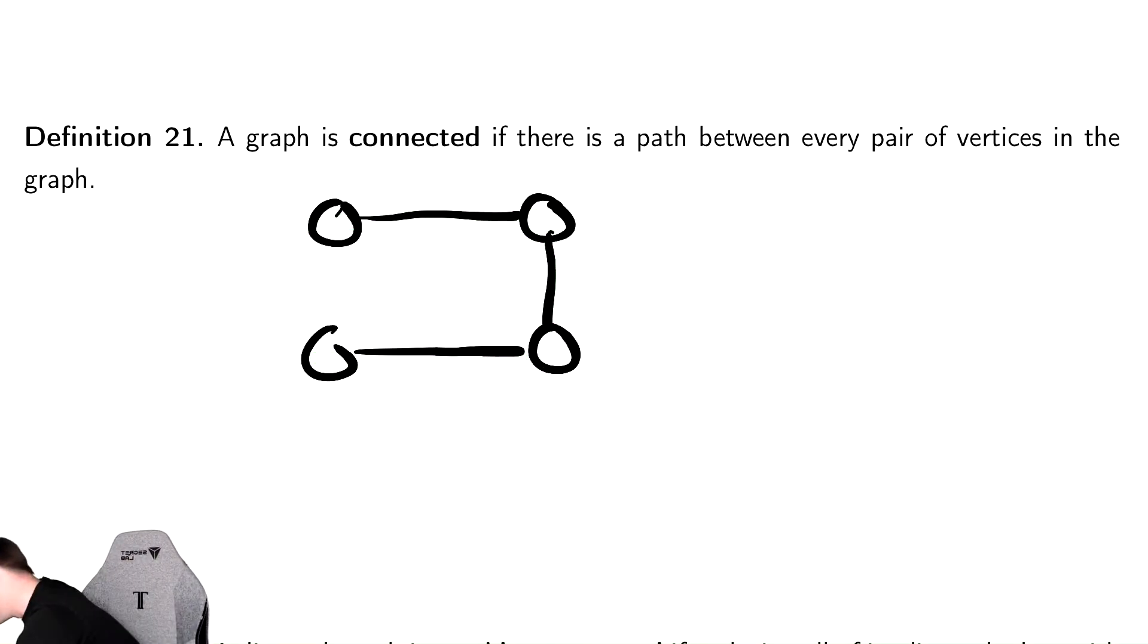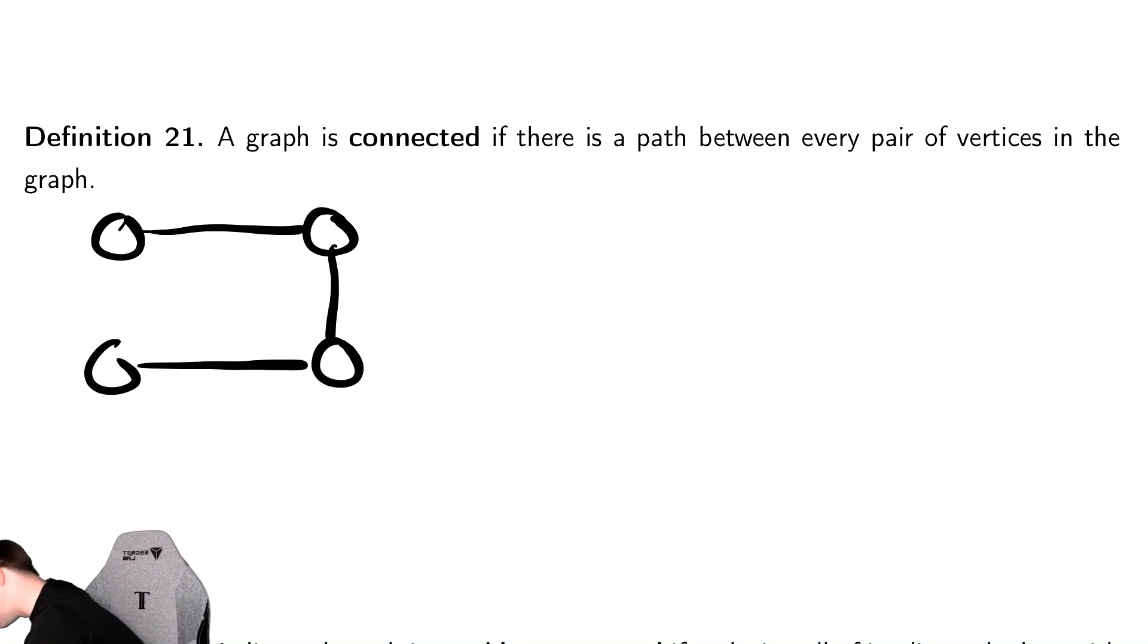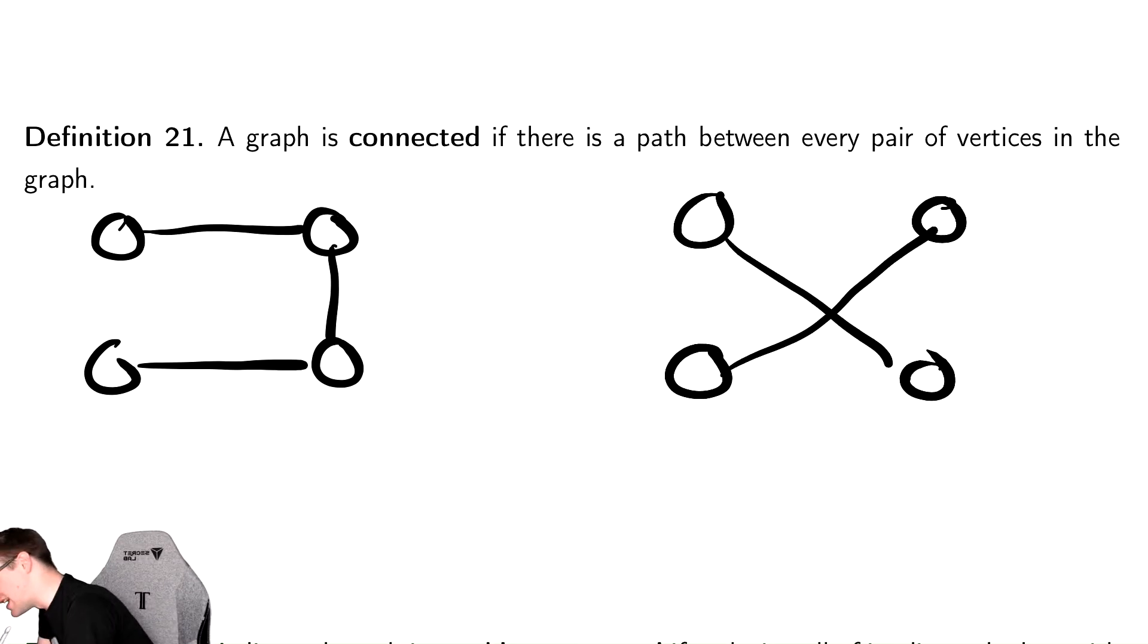Let's give one that's not connected. So the following graph on its own, that is one graph, is not connected because there are two connected components, is what we call those. So there are two subgraphs, graphs that are stuck within the graph itself, that are connected.